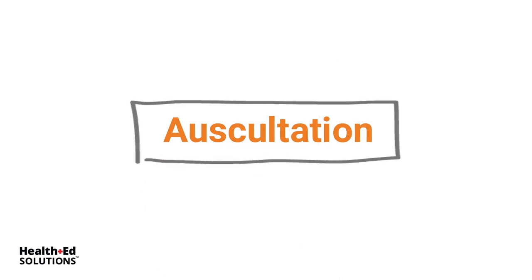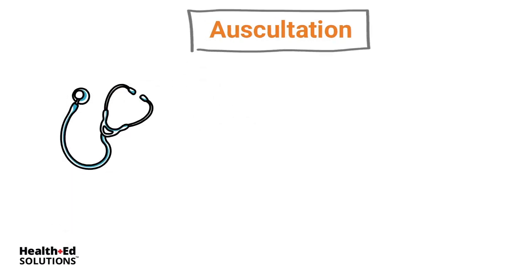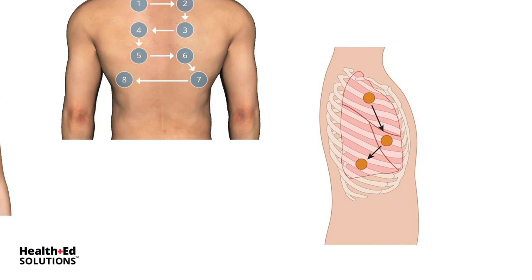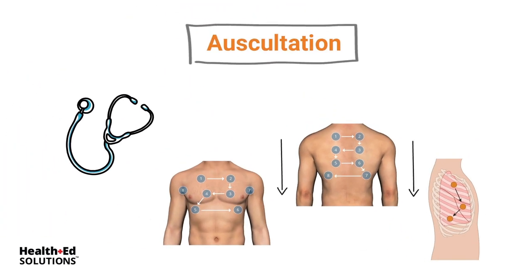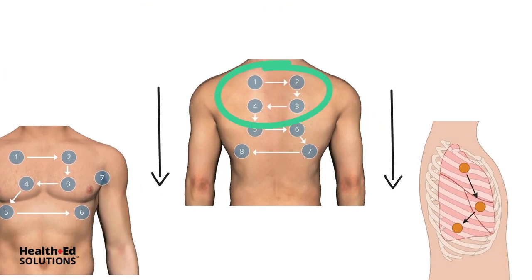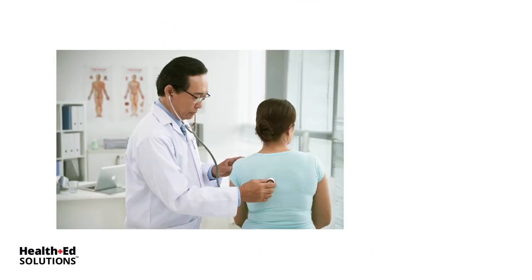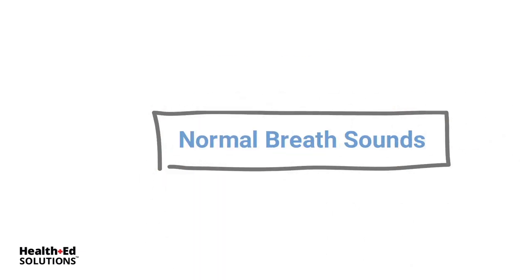Finally, auscultation. To assess all areas, there are about eight on the front and eight on the back to auscultate — don't forget the lateral lobes. You start above the clavicle and work your way down. It is very important that you listen side to side, comparing one side to the other. Normal breath sounds are bronchial, bronchovesicular, and vesicular.